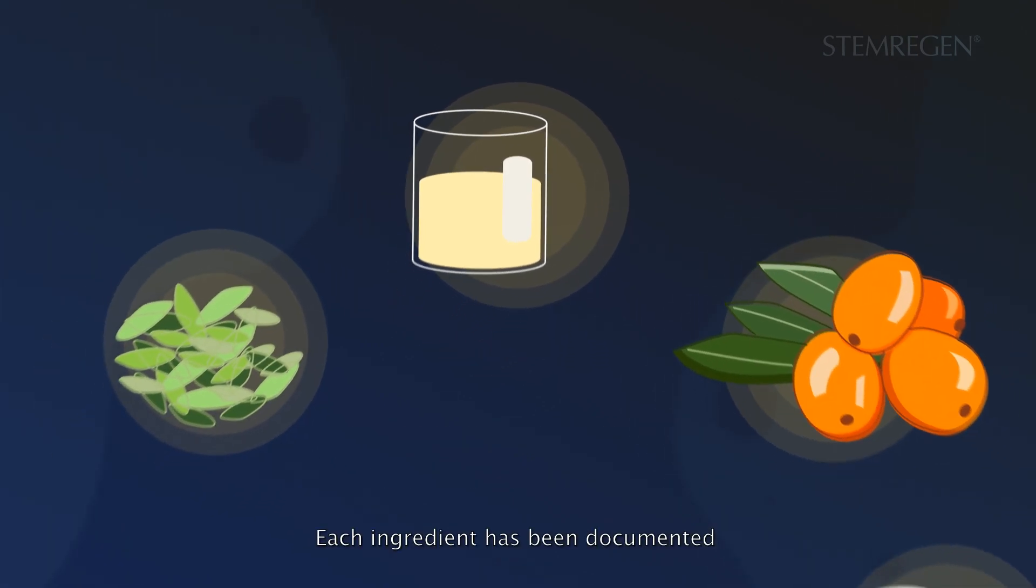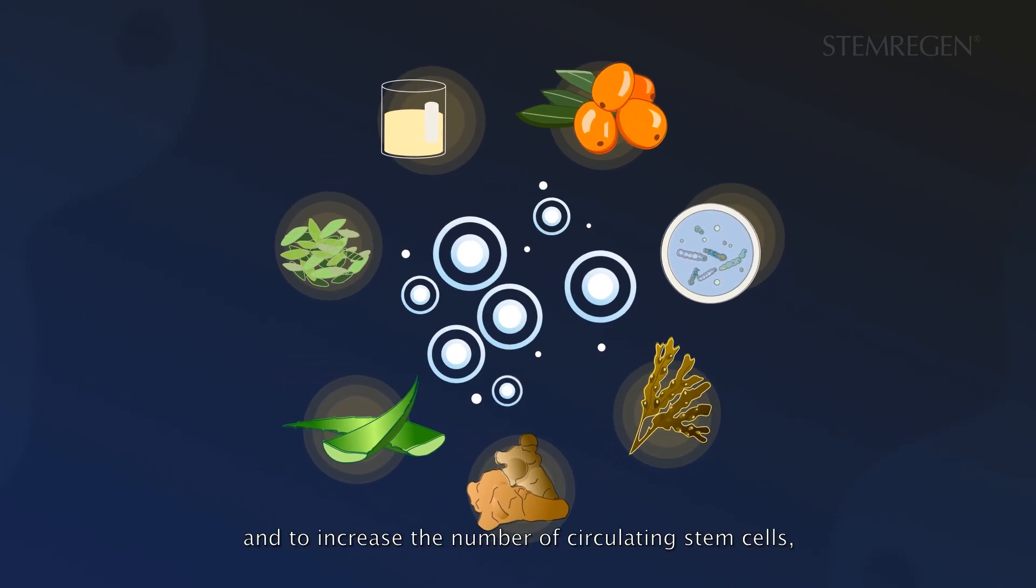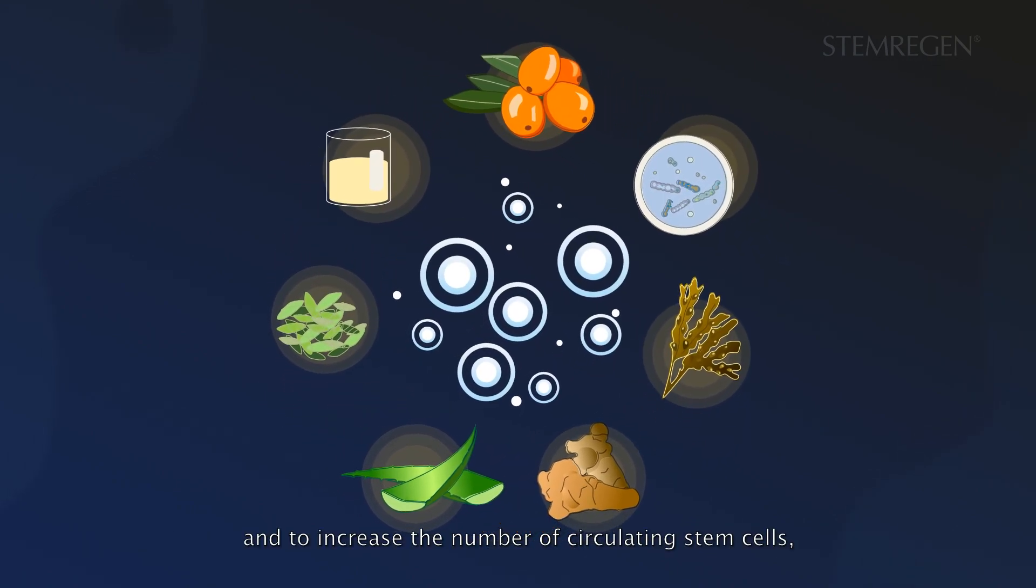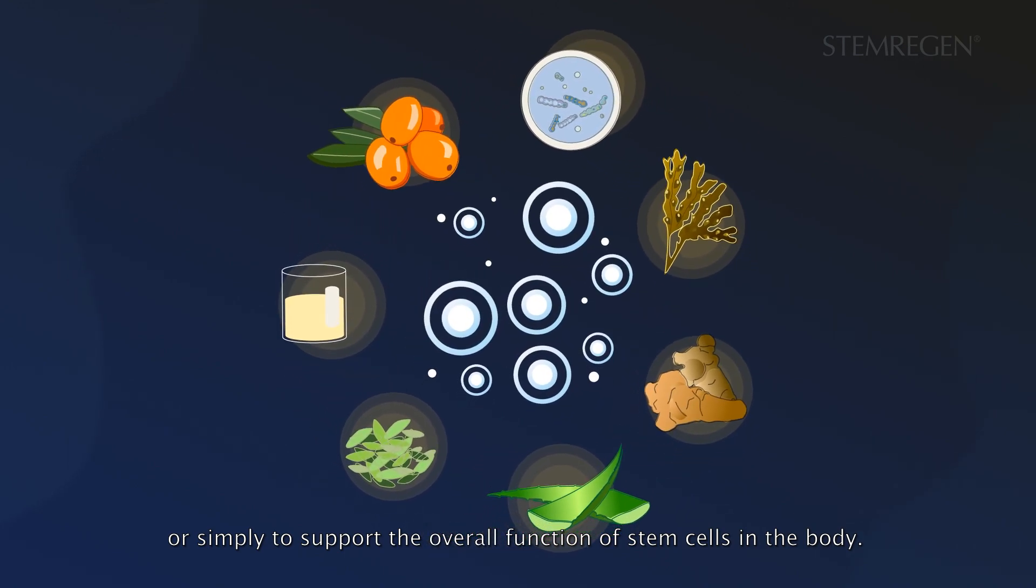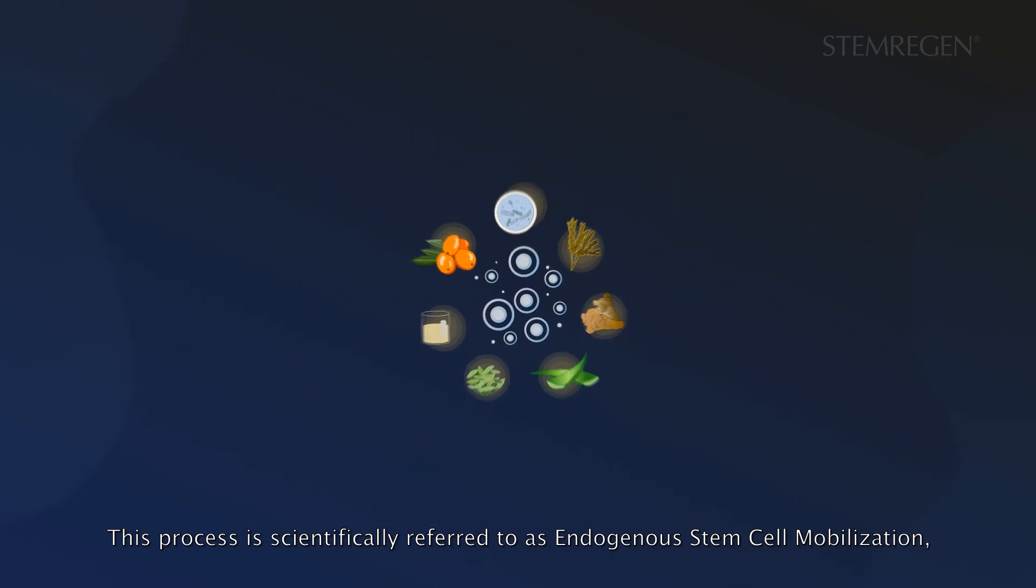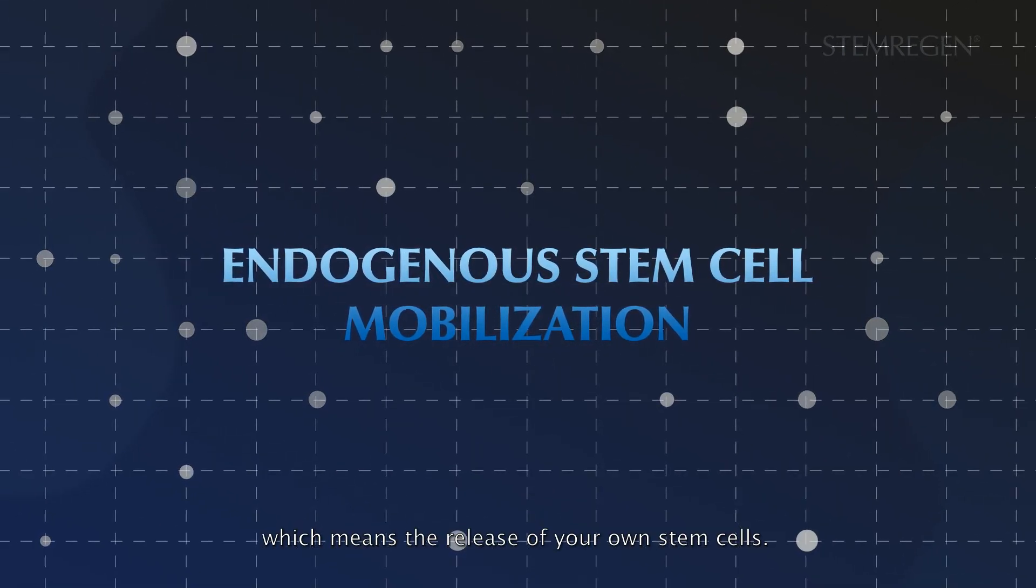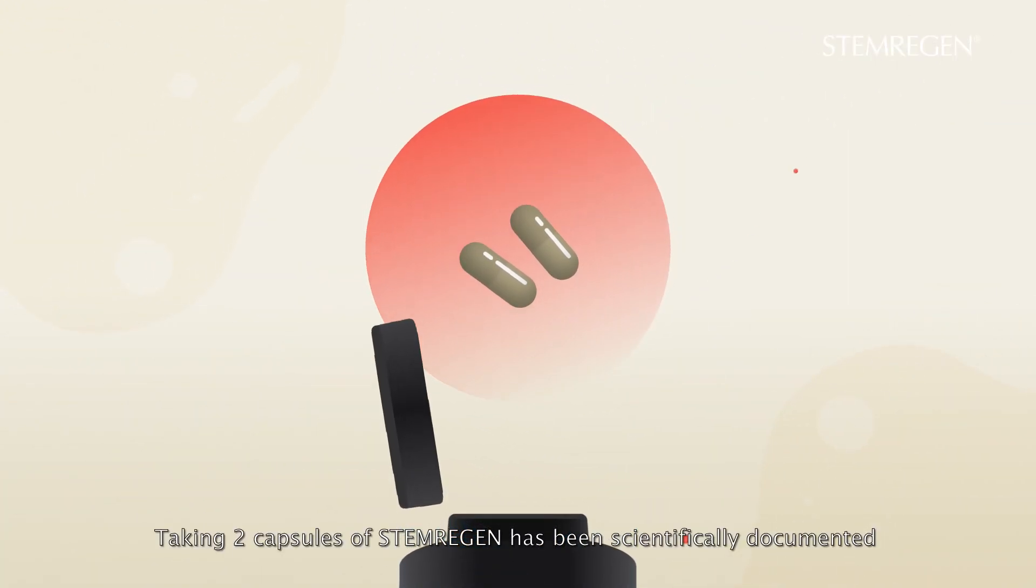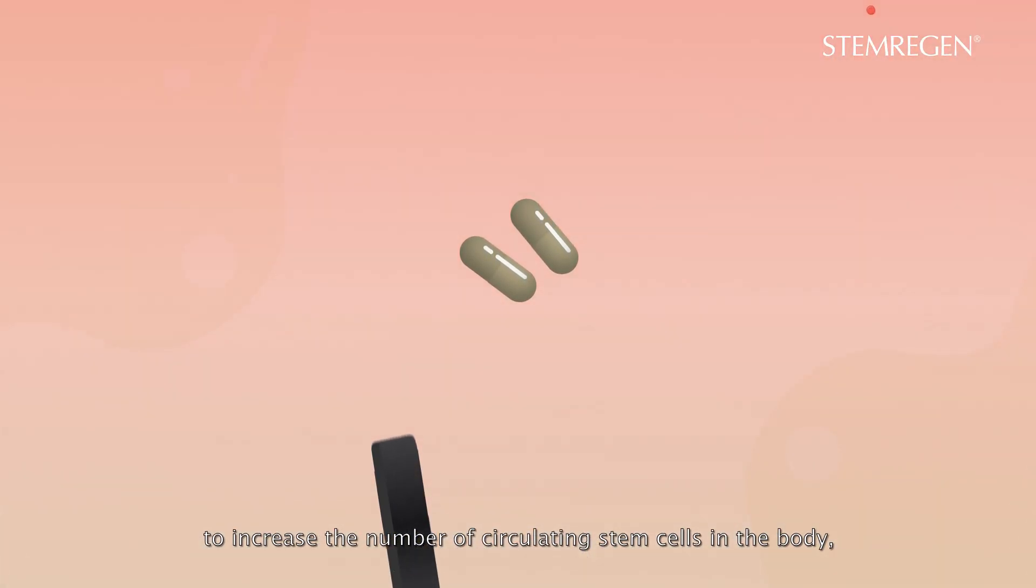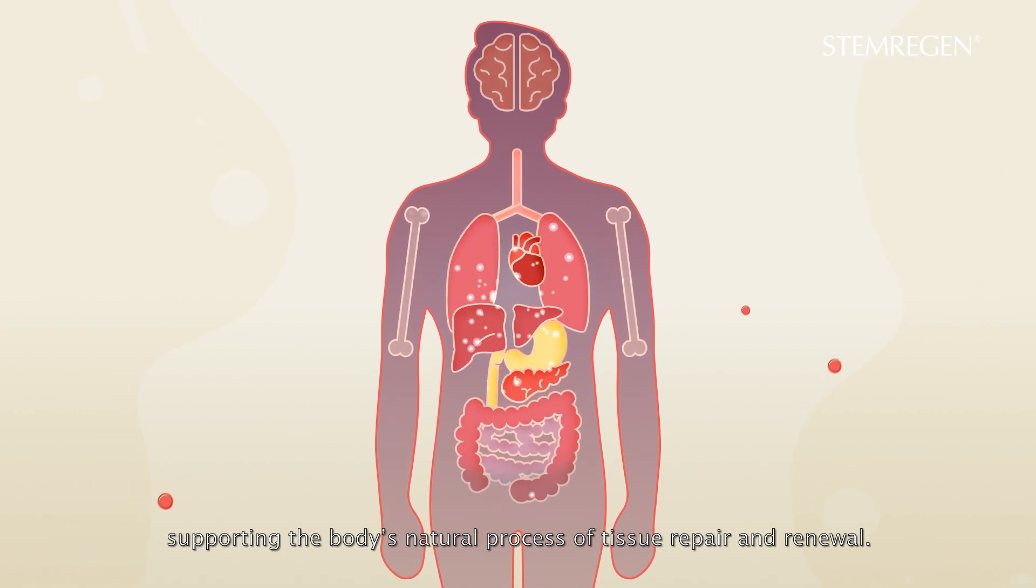Each ingredient has been documented to support the natural release of stem cells from the bone marrow and to increase the number of circulating stem cells, or simply to support the overall function of stem cells in the body. This process is scientifically referred to as endogenous stem cell mobilization, which means the release of your own stem cells. Taking two capsules of Stemregen has been scientifically documented to increase the number of circulating stem cells in the body, supporting the body's natural process of tissue repair and renewal.